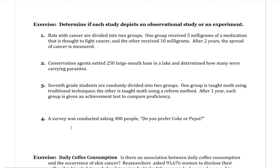Now for a couple of examples. Determine if each study depicts an observational study or an experiment. First: rats with cancer are divided into two groups — one group received 5 milligrams of medication thought to fight cancer, the other received 10 milligrams. After two years, the spread of cancer is measured. Since one group received 5 mg and another received 10 mg, something was done — different individuals received different treatments — so this is definitely considered an experiment.